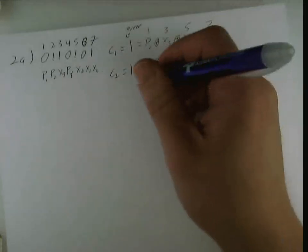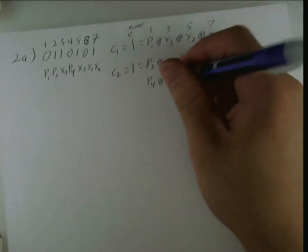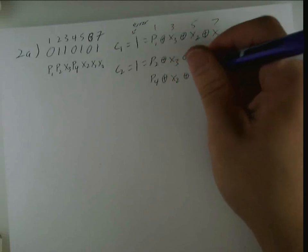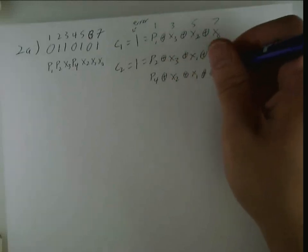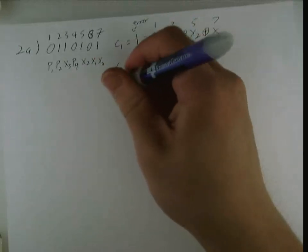And, now, we need to do p4. So, that's going to be p4, xor x2, xor x1, xor x0. And, so, we'll count these up. 0, 1, 2. So, 0 is equal to c4.